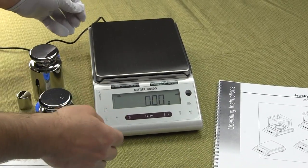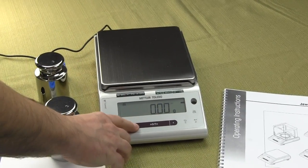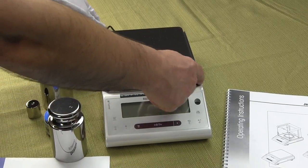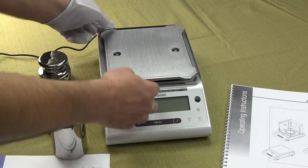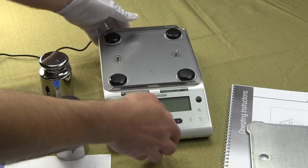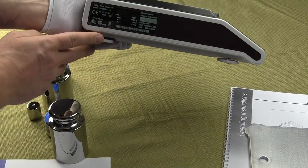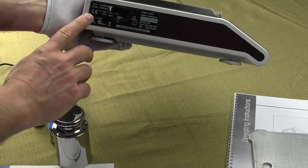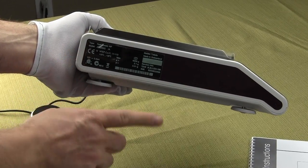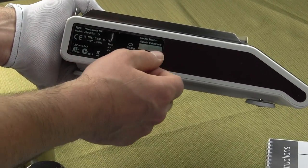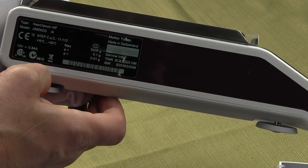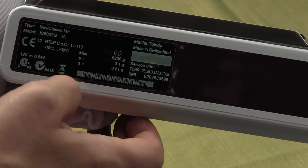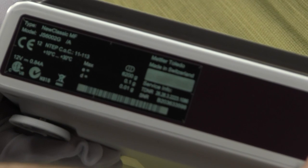Some more features on the balance here. On the side of the balance, you'll notice, since this is a legal for trade balance, Mettler Toledo puts, it's made in Switzerland. The C of C is depicted on the balance here. There's a certificate of conformance. So you see right here, NTEP, CSC. So the CSC marking is here in the model number.